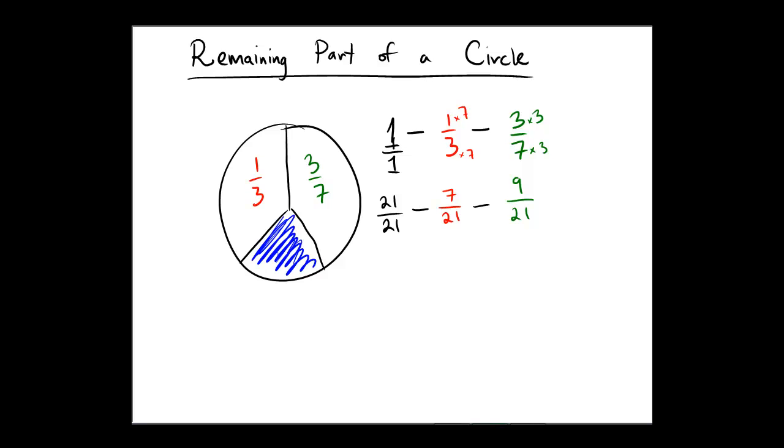Now, after doing some arithmetic, this would become 21 minus 7 minus 9, all over 21. 21 minus 7 would be 14 minus 9 over 21, and 14 minus 9 is 5 over 21. So, the answer to this problem would be 5 over 21.